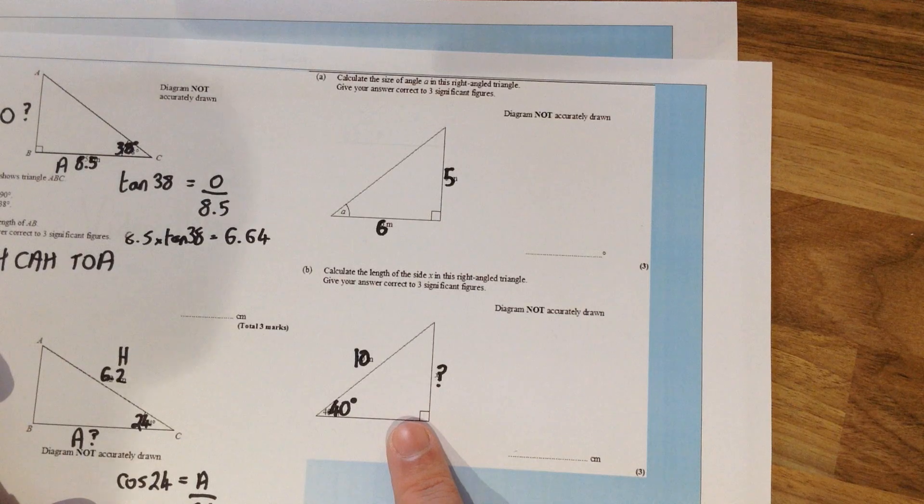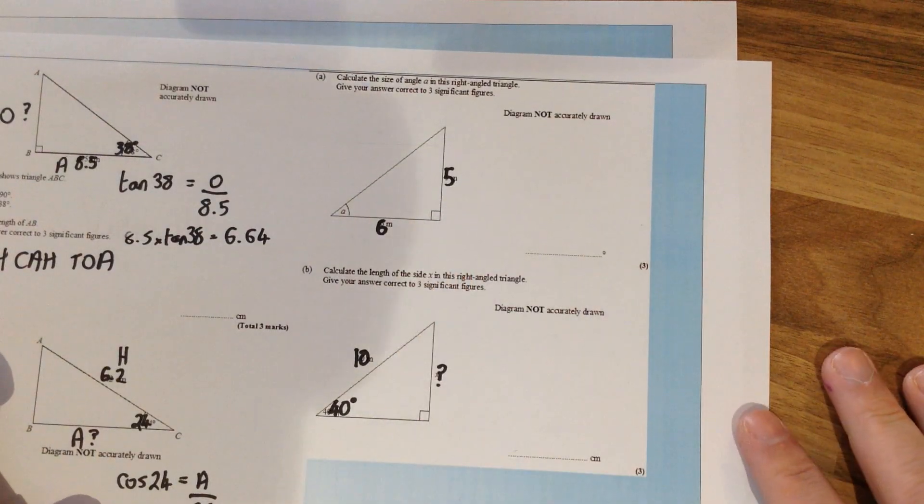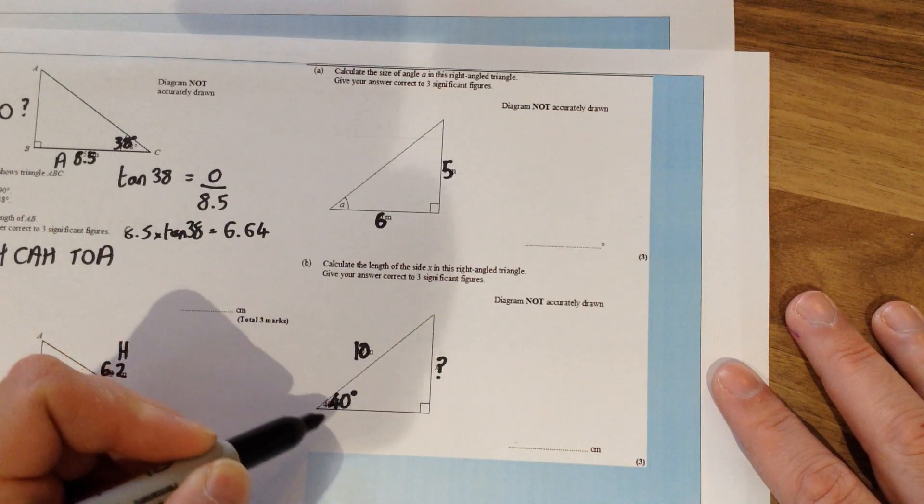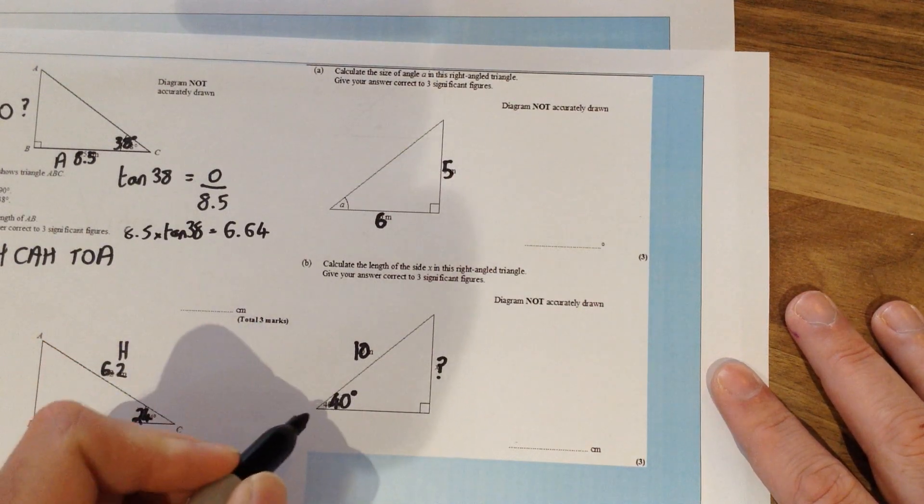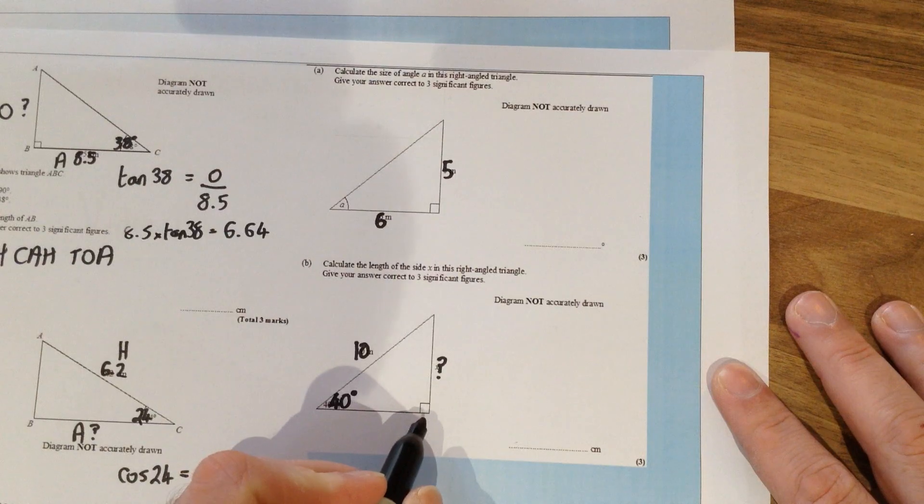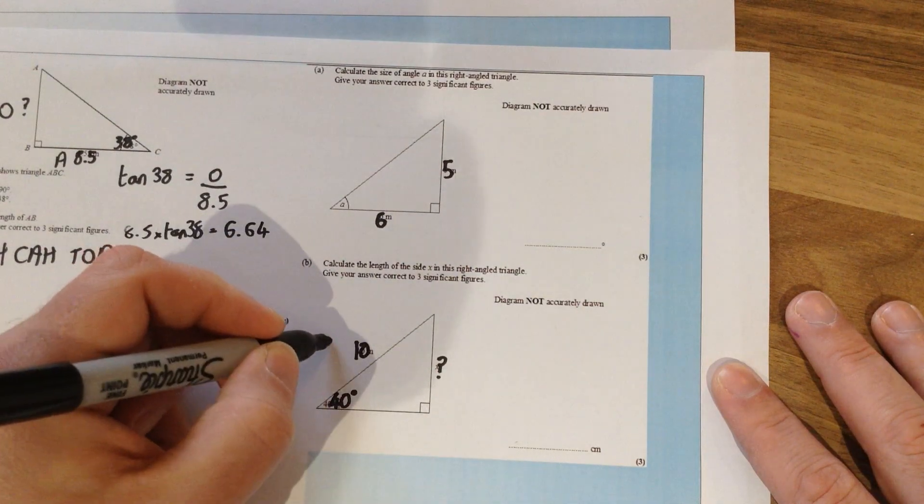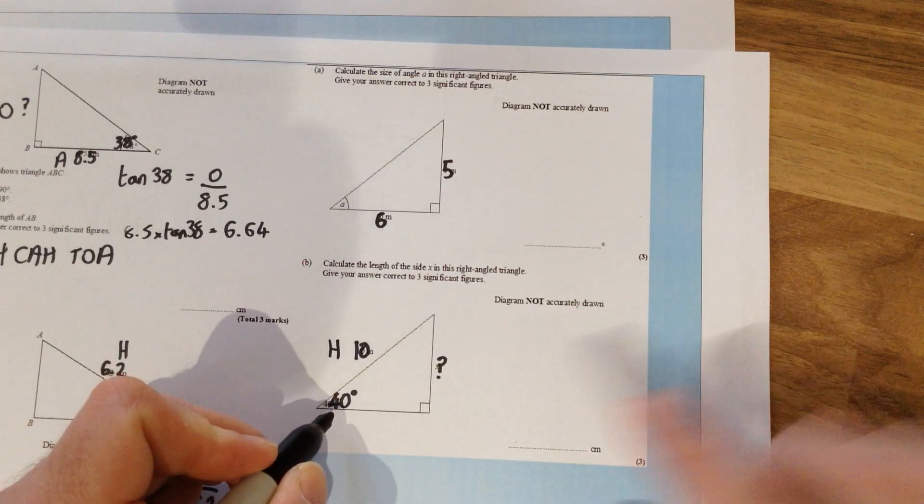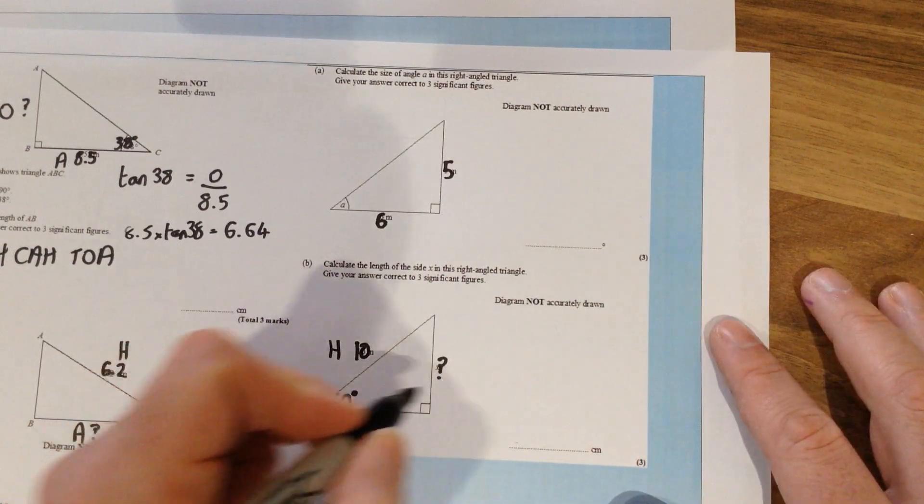We're going to look at this question next just because the one above is a slightly different style. So here again the angle that we've got is 40 degrees. This side here is not touching the right angle so again this is the hypotenuse. If this is the angle, this side over here would be the opposite.